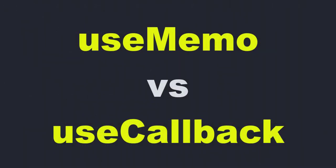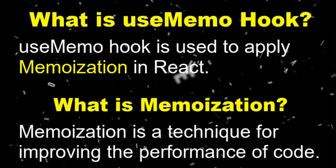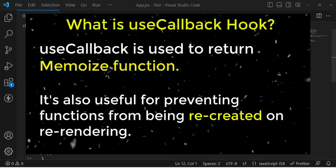Hello everyone, this video is about the useMemo hook versus the useCallback hook — what is the difference between them. We will explain it and you will get a clear concept of the difference. The useMemo hook is used to memoize a value, but the useCallback hook is used to memoize a function.